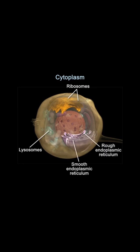Endoplasmic reticulum, or ER, is a membranous network of interconnected canals and sacs — some with ribosomes attached, called rough endoplasmic reticulum, and some without, called smooth endoplasmic reticulum. The rough endoplasmic reticulum is primarily concerned with protein synthesis, and the smooth endoplasmic reticulum is primarily concerned with the synthesis of lipids and steroids.